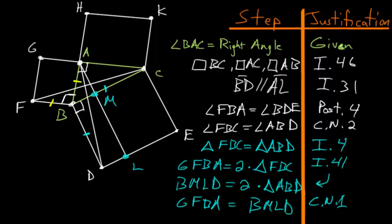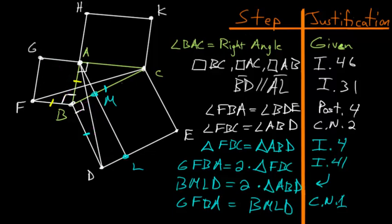To recap what we have just proven: we've shown that this square here is equal to this rectangle here. We're partway through the proof, but the next part will essentially duplicate this exact same argument, involving this other square and this other rectangle.